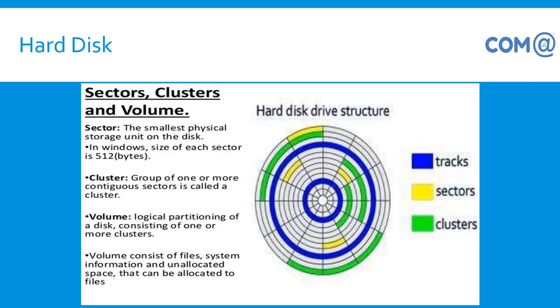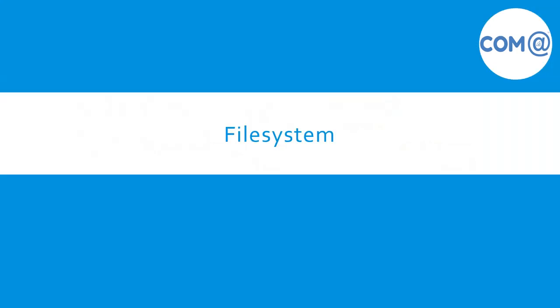In Windows, the size of each sector will be 512 bytes. A cluster is a group of one or more continuous sectors, and a volume is a logical partitioning of a hard disk consisting of one or more clusters. A volume consists of file system information and allocated space that can be assigned to files.